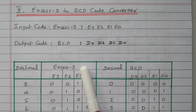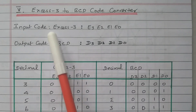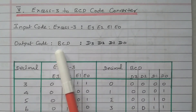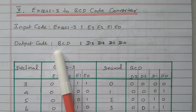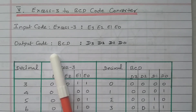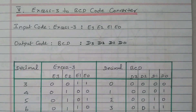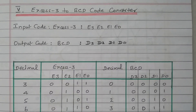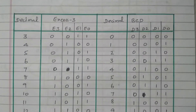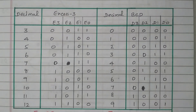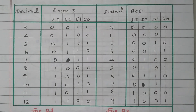Now we will form the truth table for converting from XS3 to BCD. From the truth table, we can frame the minimized Boolean function, and that Boolean function will then be implemented with logic gates.